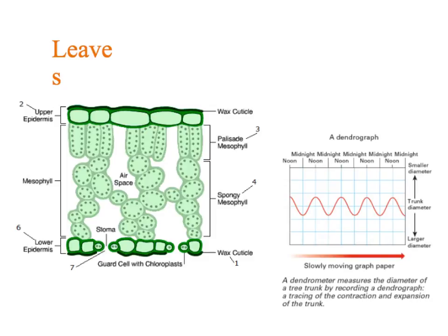Xerophytes can exploit Fick's Law to reduce the amount of water loss. Adaptations such as sunken stomata, hairy leaves, and rolled-up leaves cause a reduction in the water potential gradient, reducing the rate of osmosis and water loss out through the leaf by evaporation.